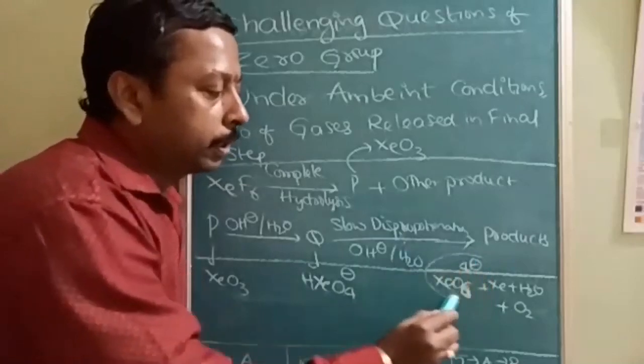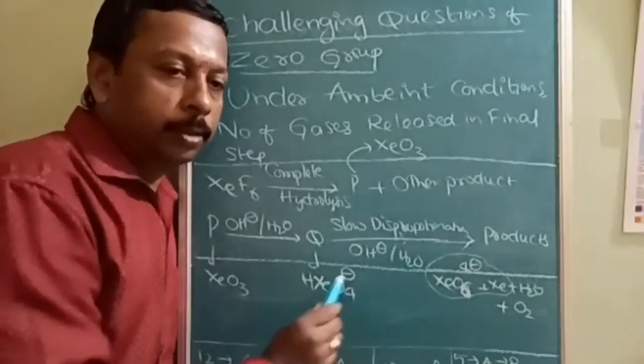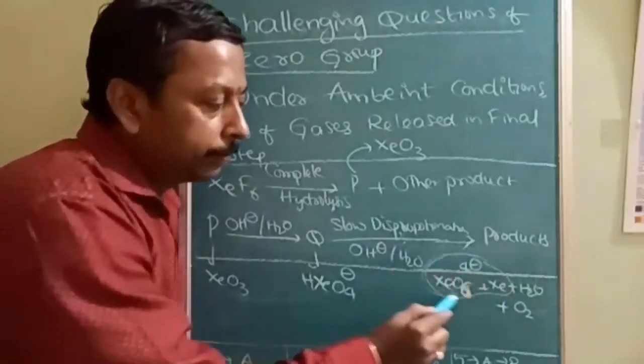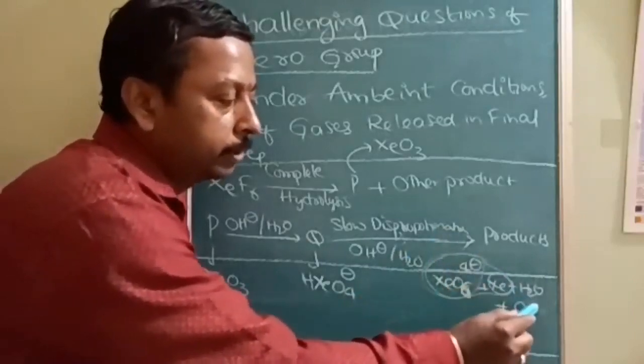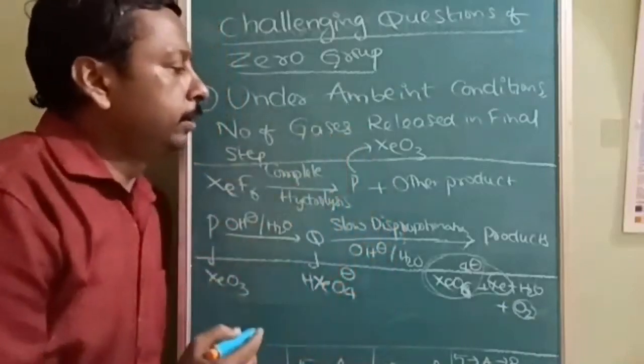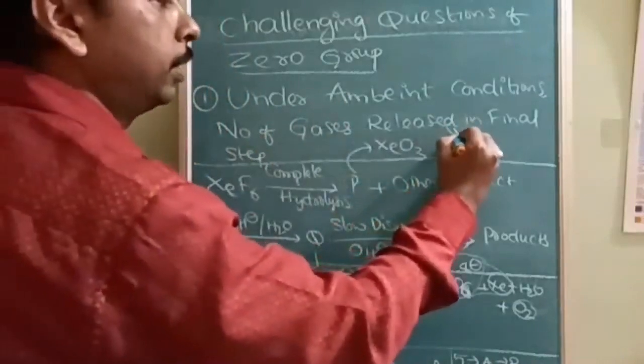Now question is not about the product, question is about the physical state. See, this is salt so it will be in solid state, xenon is a gas, H2O is a liquid, O2 is a gas. So answer: under ambient condition find the number of total number of gases, so answer will be 2. What is answer? Answer is 2.